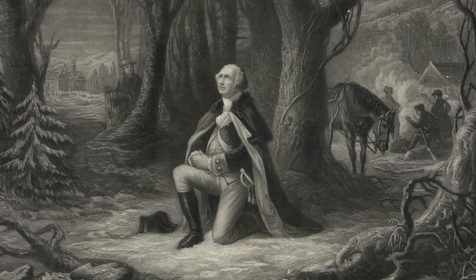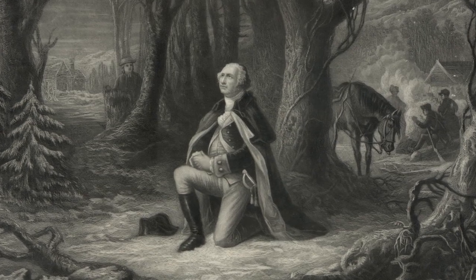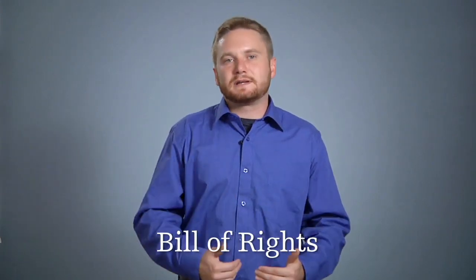So they recognized that there had to be some better form of government, something that had that checks and balances like we mentioned. And so, many of the Anti-Federalists eventually agreed to the Constitution so long as it had a Bill of Rights.